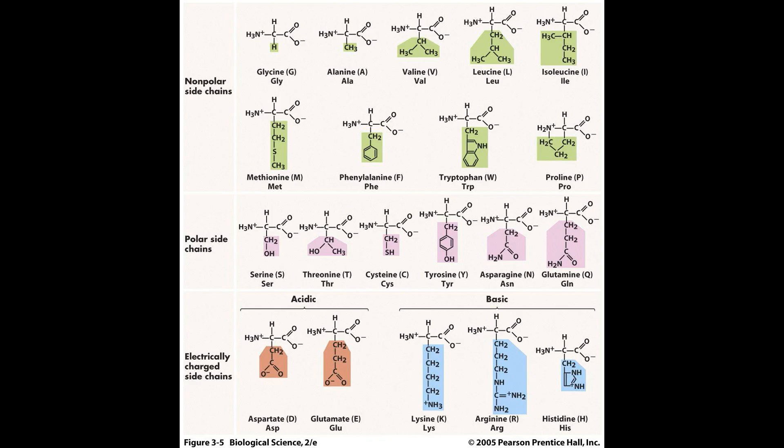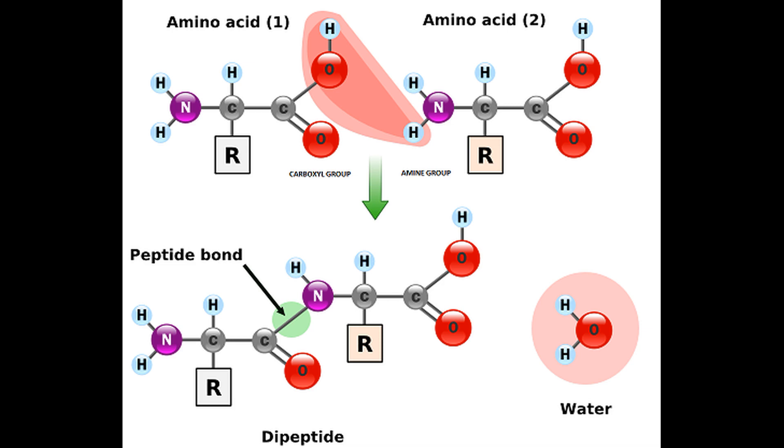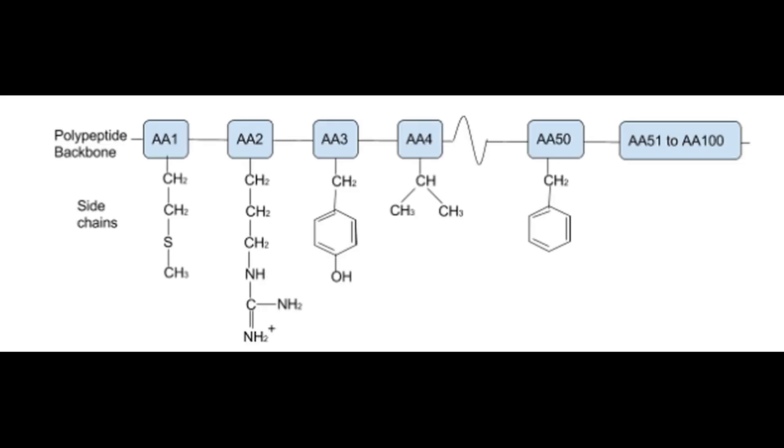But first, you need to know what proteins are. A single protein molecule is a polypeptide, a type of polymer made of monomers called amino acids, which are molecules that have an amine group, a carboxyl group, and an R group. This R group varies between different amino acids, of which there are 20 in total. To form a polypeptide, amino acids connect to each other at the amine and carboxyl groups by forming peptide bonds, which constitute the backbone of the polypeptide chain.